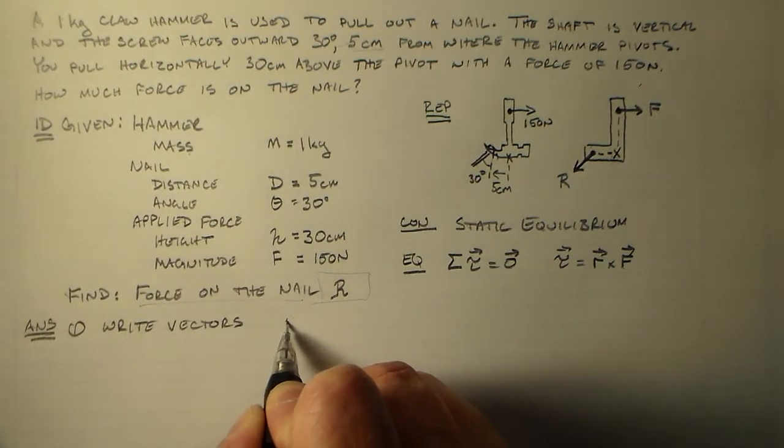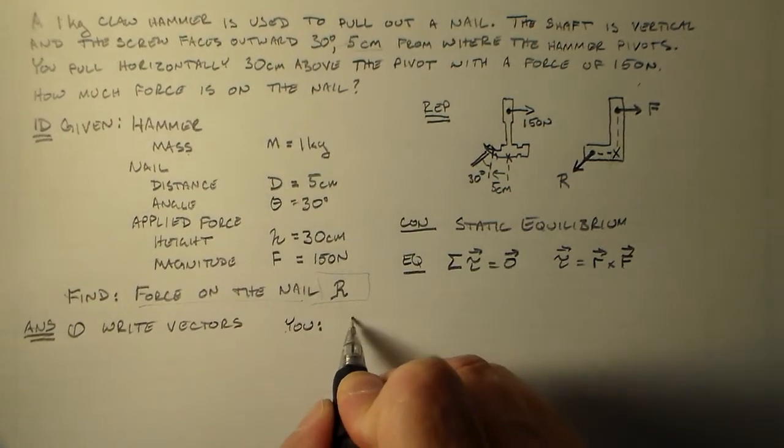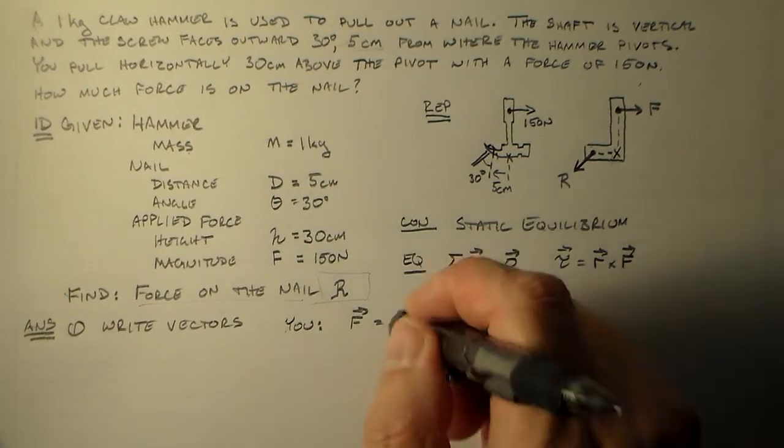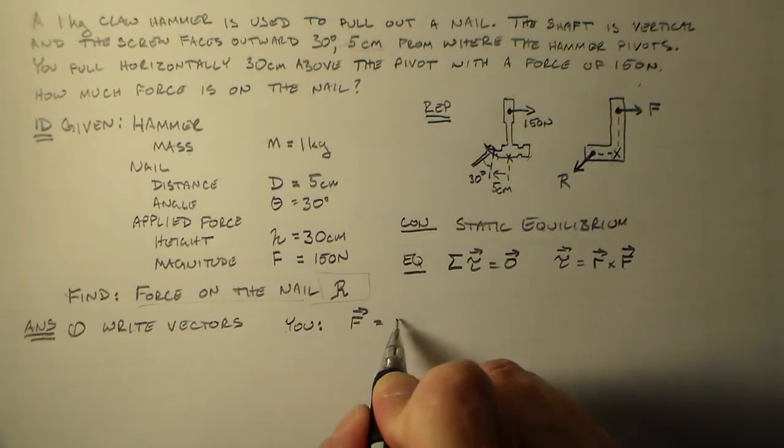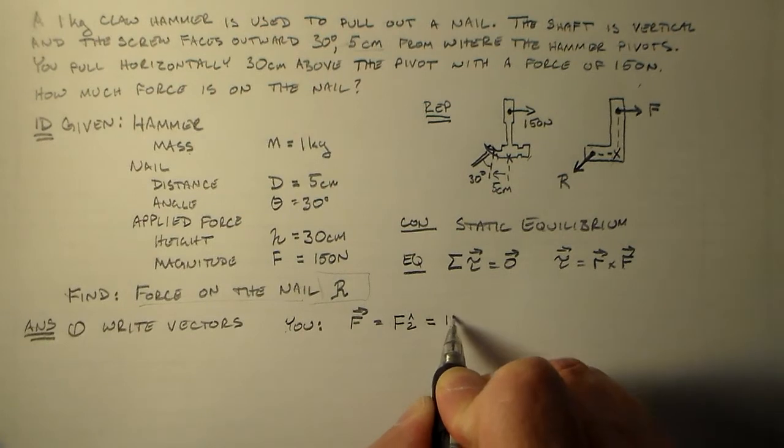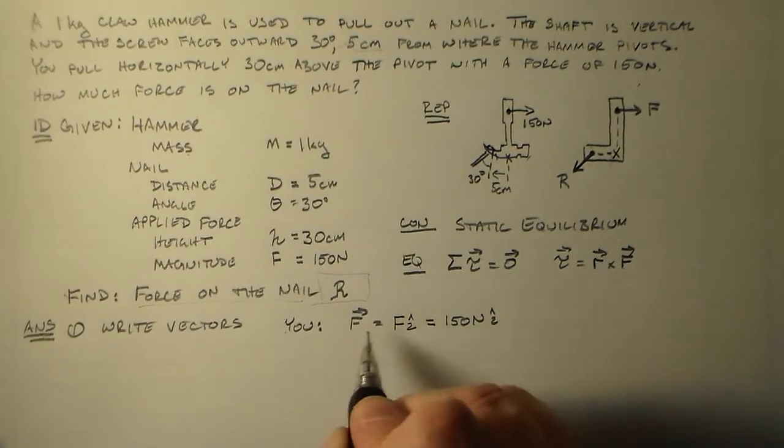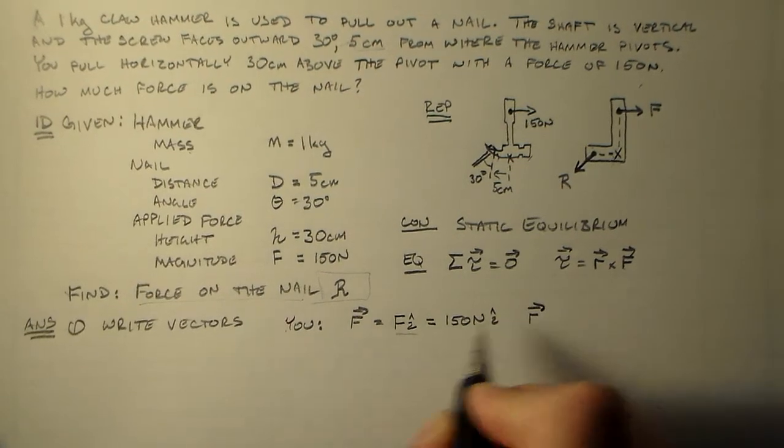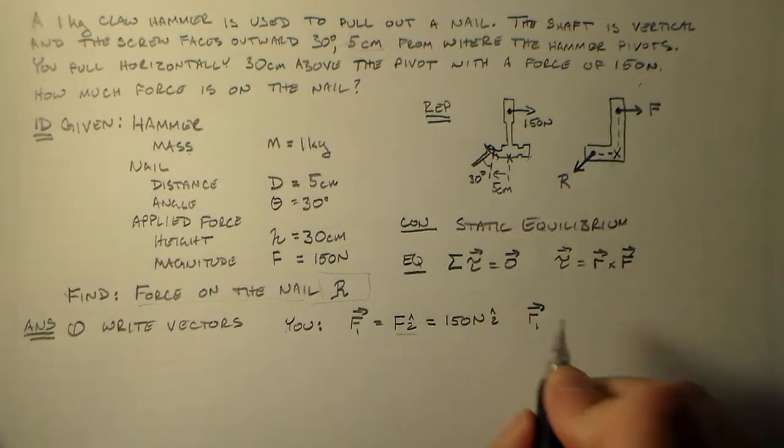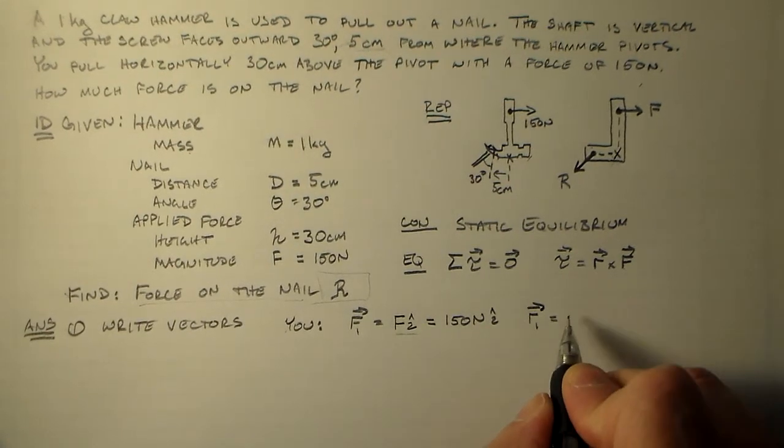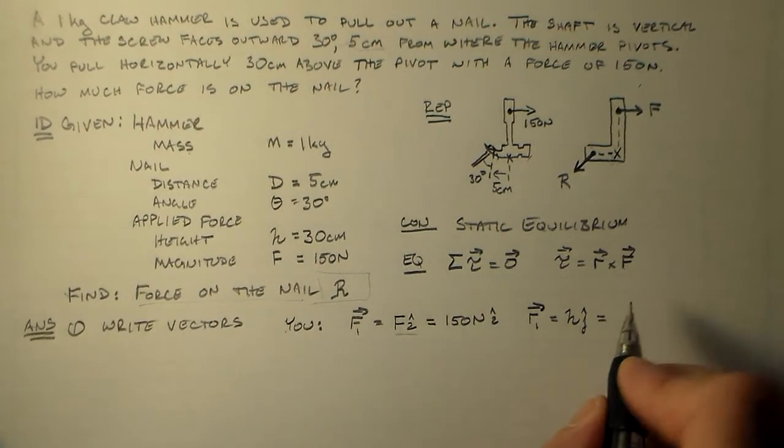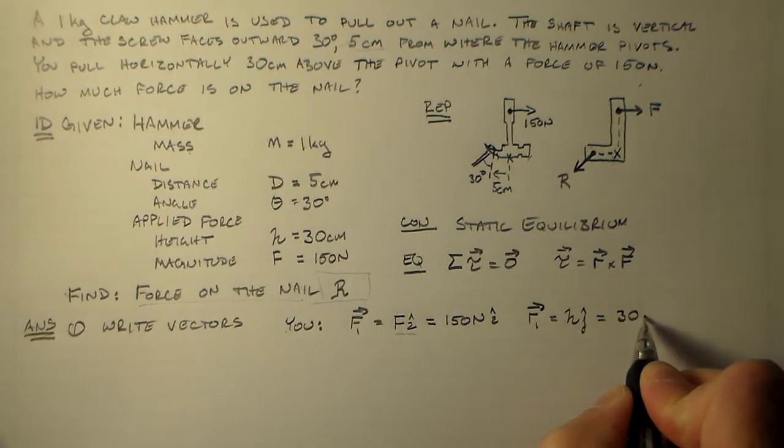So let's see. For you, the force you have is this 150 newtons. And it is 150 newtons in the i hat direction. So that's 150 newtons in the i hat direction. I'll probably use this first. And the position, label these one. The position is 30 centimeters above. So that is h j hat, which is 30 centimeters times j hat.